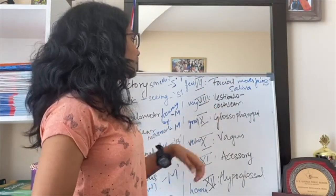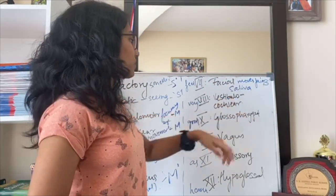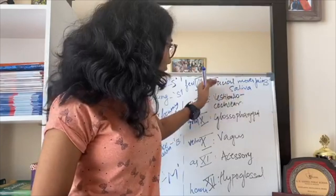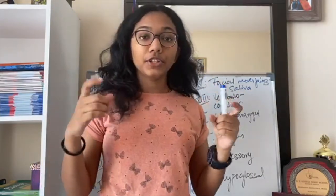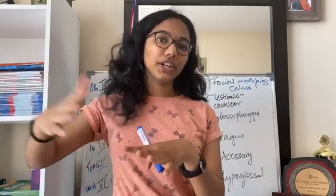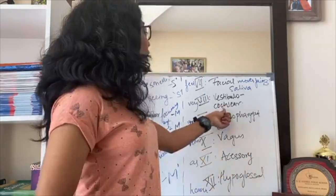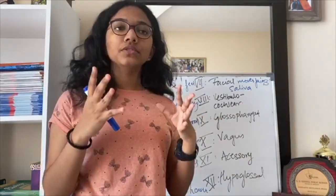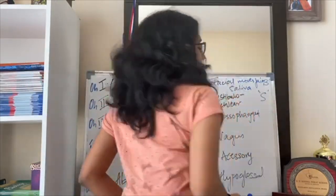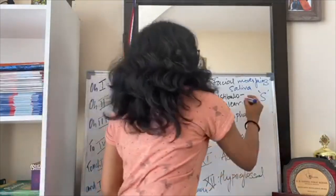The eighth nerve is vestibulocochlear. The ear has two functions — hearing and balance. The vestibular part of this nerve is for the balance of our body, and the cochlear part refers to the hearing function of the ear. This nerve is sensory, covering both hearing and balance.